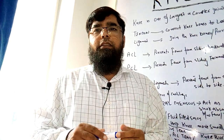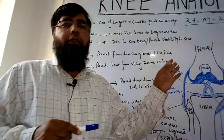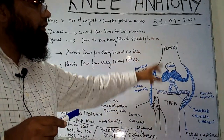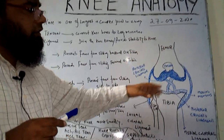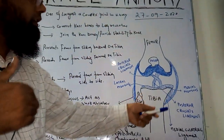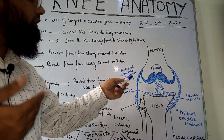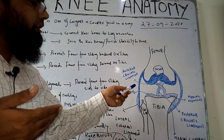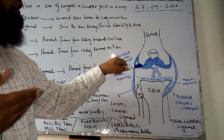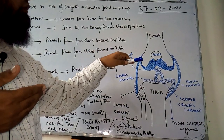Assalamu alaikum dear students, welcome to today's lecture. Today we are discussing knee anatomy. We will discuss the medial and lateral meniscus, the anterior cruciate ligament, the posterior cruciate ligament, and the collateral ligaments. All these ligaments play a very important role in knee strength.